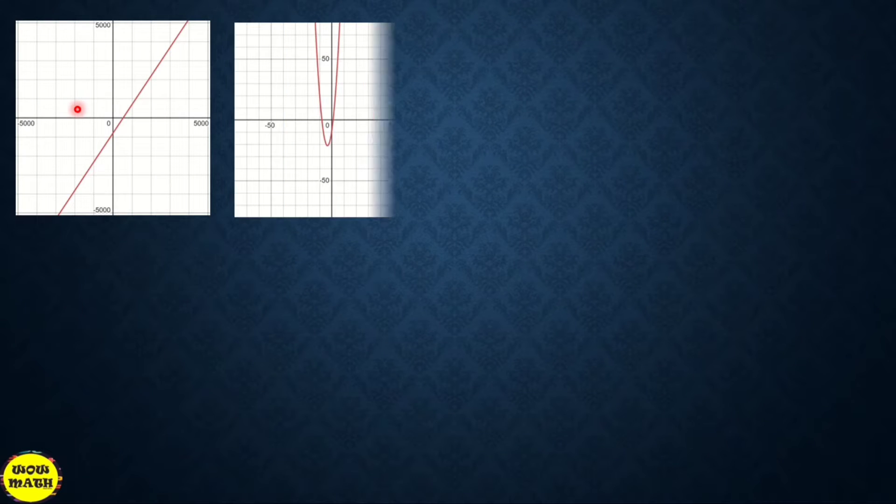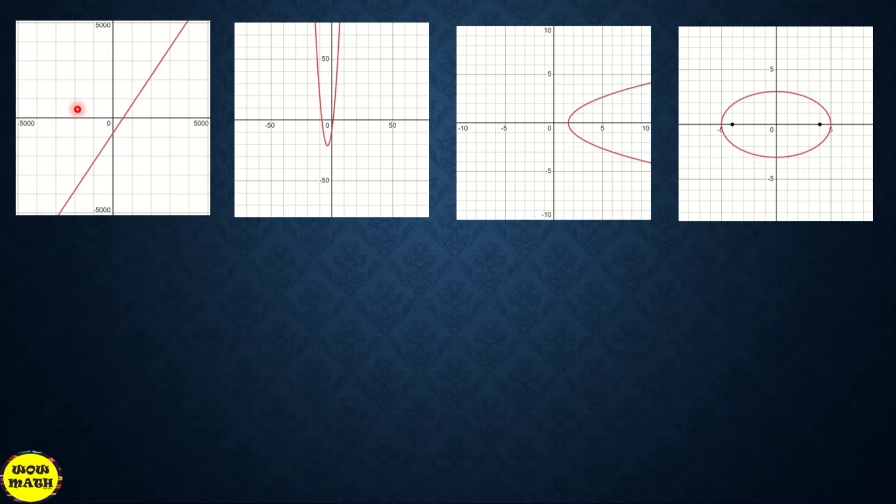Consider the four graphs and then we try to draw a vertical line test. What did you observe? You will notice that the vertical line will only intersect in graph number 1 and in graph number 2 once. Ibig sabihin, itong graph number 1 and 2 natin, isang beses lang nag-intersect itong vertical line. But dito sa graph number 3 and 4, the vertical line intersects twice.